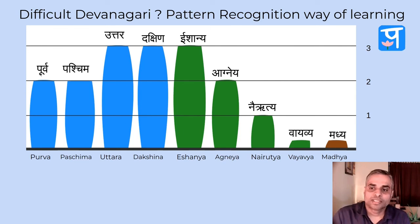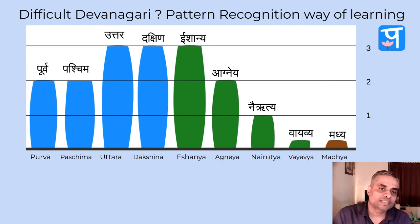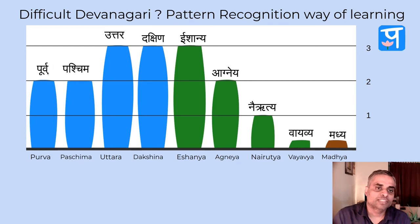The image shows various keywords representing nine directions: Purva, Paschima, Uttara, Dakshina, Ishanya, Hagnaya, Nairutya, Vayavya, and Madhya. To understand each word we need to identify the Aksharas. For example, to read 'Purva' you need to understand two basic Aksharas. For 'Paschima' there are three Aksharas, but since Purva has already been learned, you need to identify only two more: Cha and another Akshara. For Uttara: Uta and R — three words similarly for Dakshina and Ishanya.